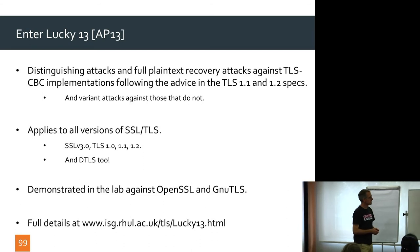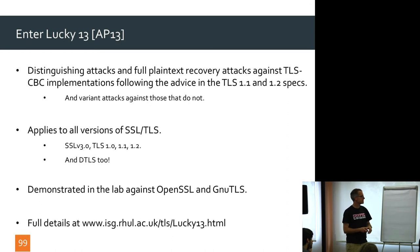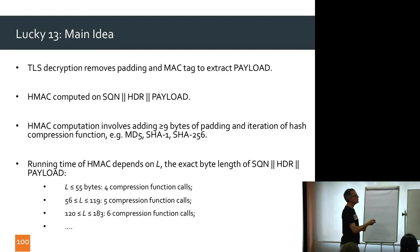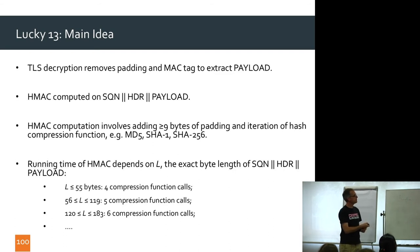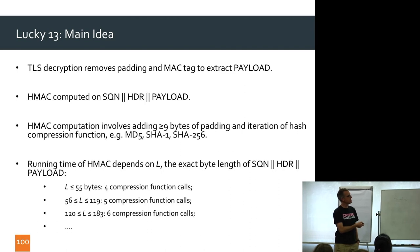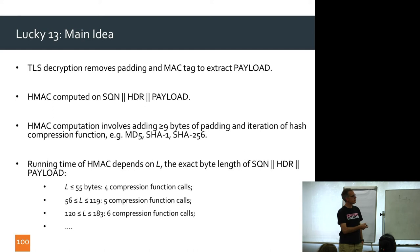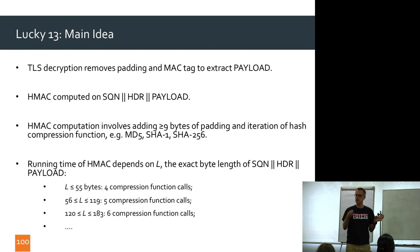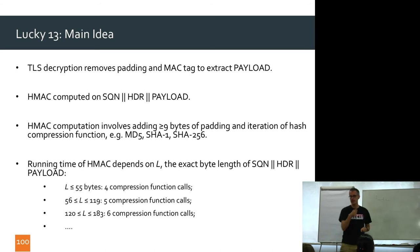So, Lucky 13 — this was Nadem and myself. Here's the main idea. The HMAC calculation is done on a data structure: sequence number, header, payload — the 13-byte structure of 8 + 5 bytes, then payload. When you do the HMAC computation, the hash function adds internal padding of its own — at least 9 bytes of length field plus padding — to reach a block boundary for the compression function. The running time of the HMAC computation depends on the exact length of this structure.